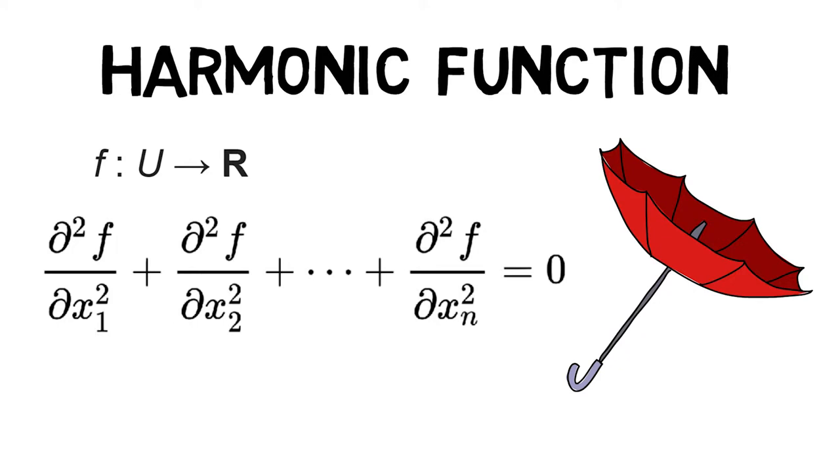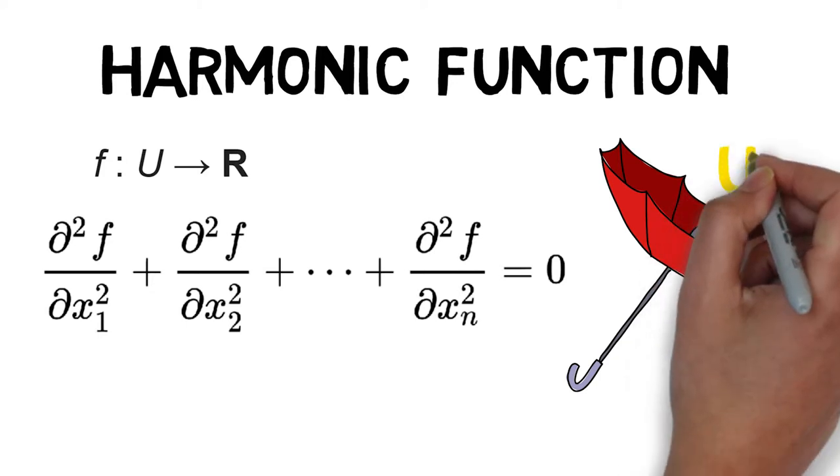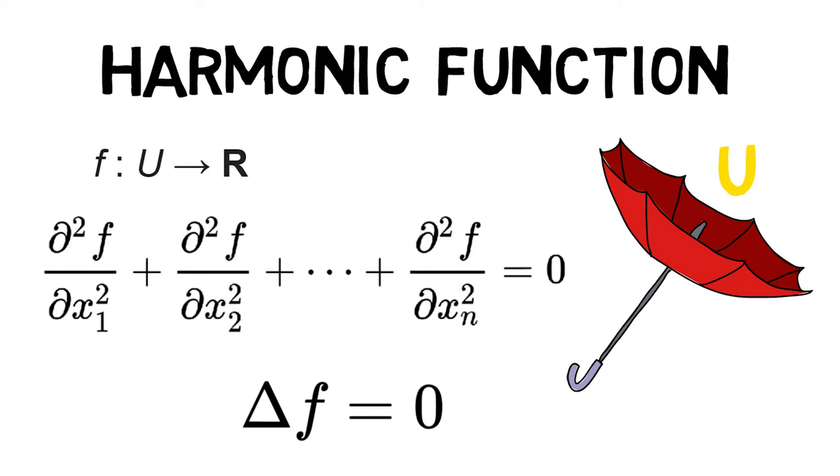That is, tau squared f upon tau x1 squared plus tau squared f upon tau x2 squared and so on until the sum reaches tau squared f upon tau xn squared equals zero everywhere on u. This is usually written as delta f equals zero.